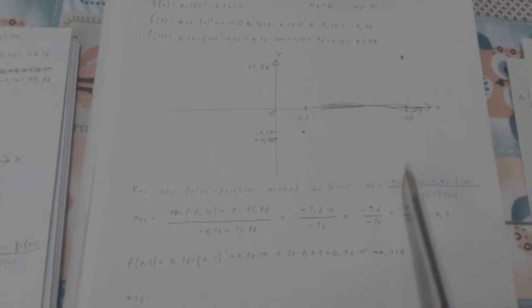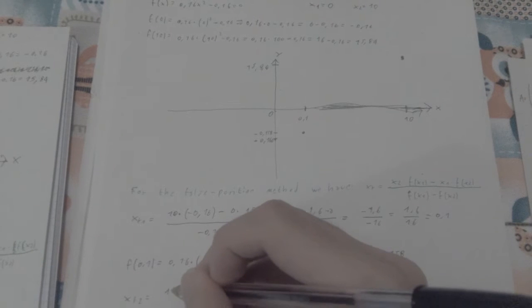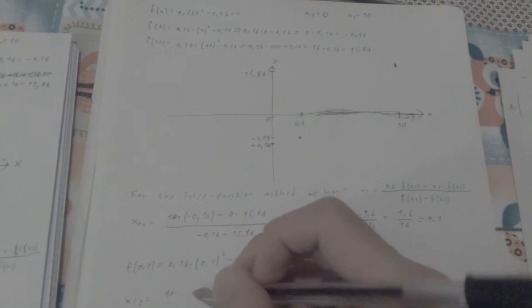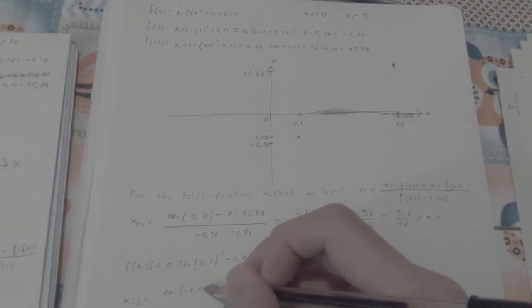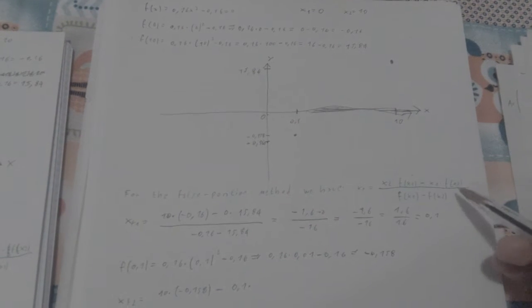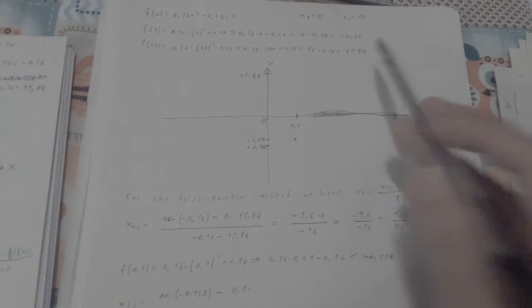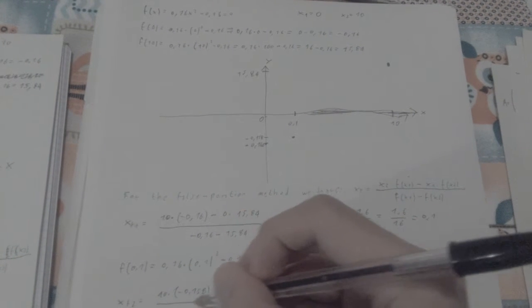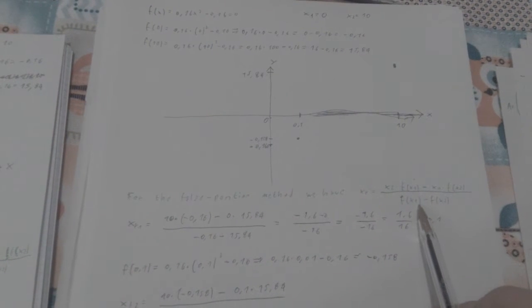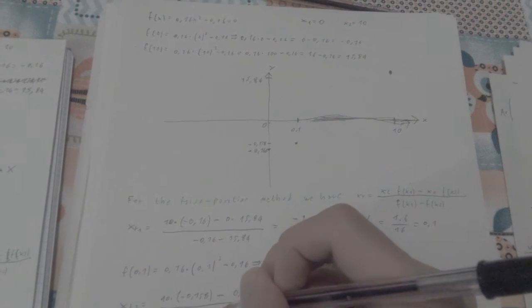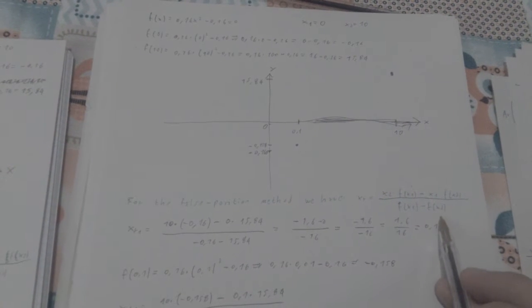So xr2 is going to be given by x2, so 10, times f(x1), so negative 0.158, minus x1, so 0.1, times f(x2), so 15.84.